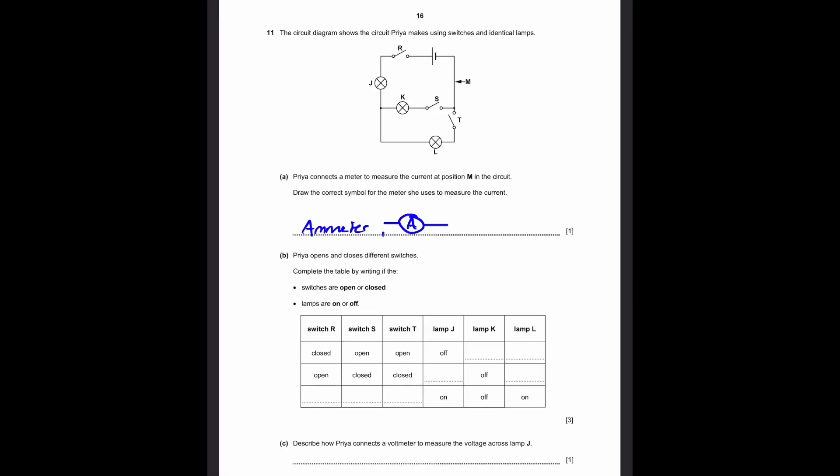Part B. Priya opens and closes different switches. Complete the table by writing if the switches are open or closed and the lamps are on or off. We have a few switches and lamps labeled here. If switch R is closed but switch S and switch T are open, that means current will flow through here and split into two paths. This path will not flow because switch S is open, and this path will also not flow because switch T is open. So none of these light bulbs will connect and all the lamps will be off. Now if switch R is open and the other two are closed, the current can't even travel past this, so all three light bulbs are going to be off.